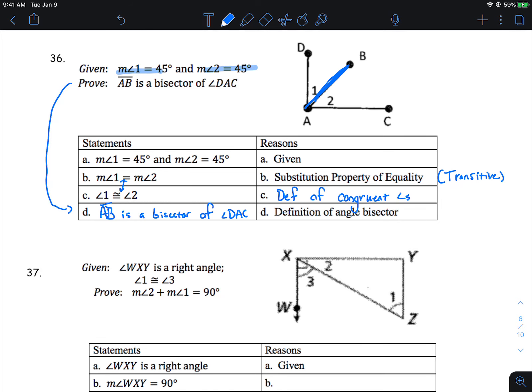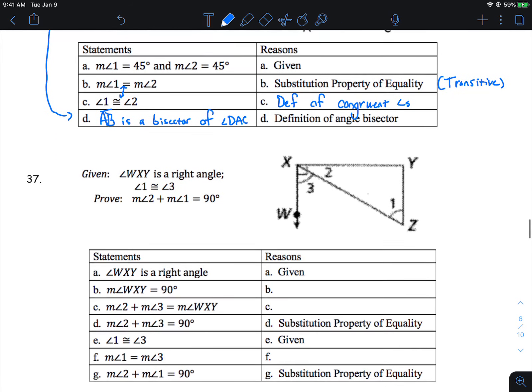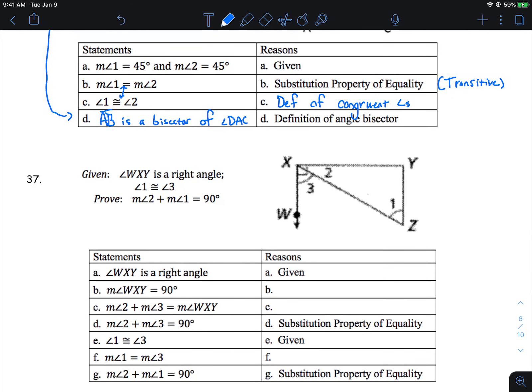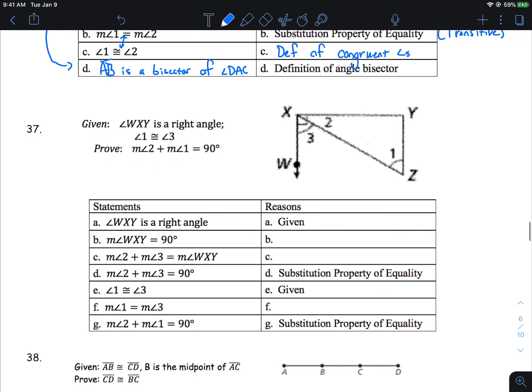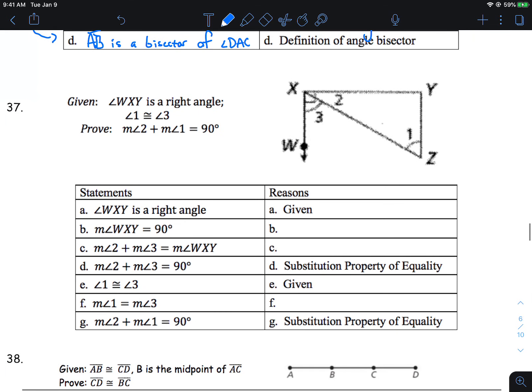Now, the proofs that are similar to these, you would have a key, I think, for them, or not a key, a word bank or a reason bank. So you'll be able to track those steps there. So that's that. Let's move along here. We got this one here, WXY is a right angle.